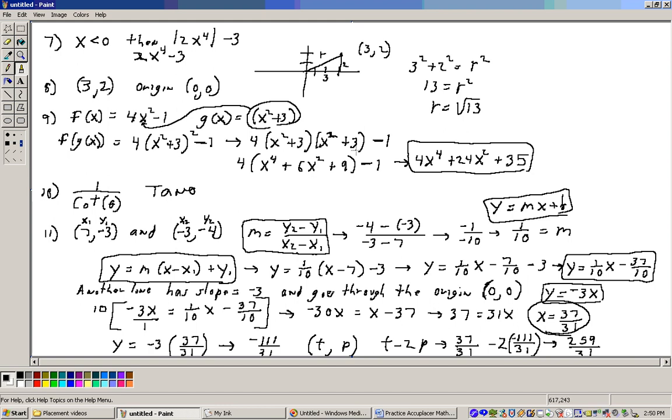Take the 4 across, and we get 4x to the 4th plus 24x squared. 4 times 9 is 36, minus this 1 gives us 35. So that would be the answer to this problem: 4x to the 4th plus 24x squared plus 35.